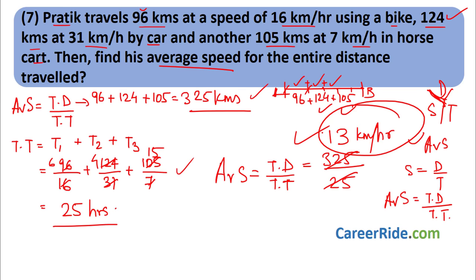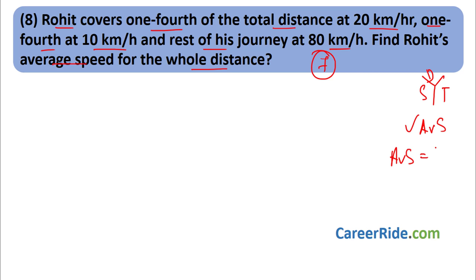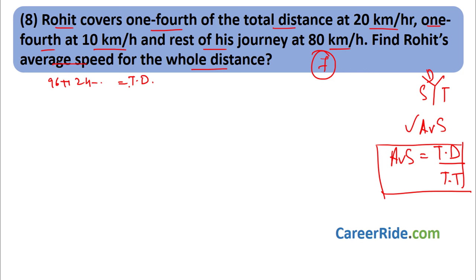Question 8: Rohit covers one-fourth of the total distance at 20 km/h, another one-fourth at 10 km/h, and the rest at 80 km/h. Find Rohit's average speed for the whole journey. This is similar to Question 7 but the total distance is not given. Let the total distance be D km. The first segment is D/4 at 20 km/h, the second is D/4 at 10 km/h, and the remaining D/2 at 80 km/h.